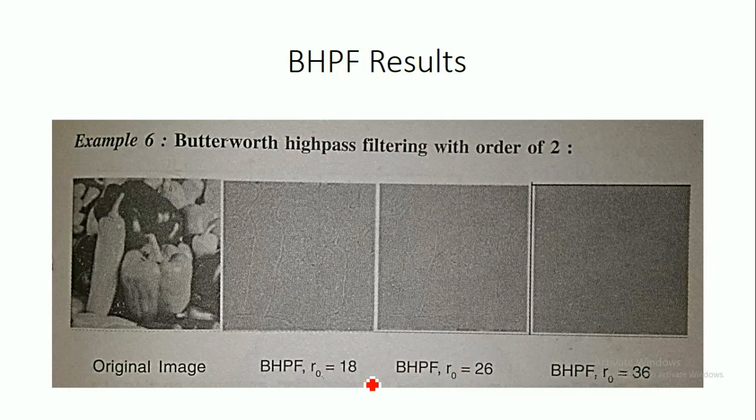By using the Butterworth high pass filter, the filtered image has some smoothing effect and the distortion is also less. Therefore, the Butterworth high pass filter is more appropriate for image sharpening than the ideal high pass filter.